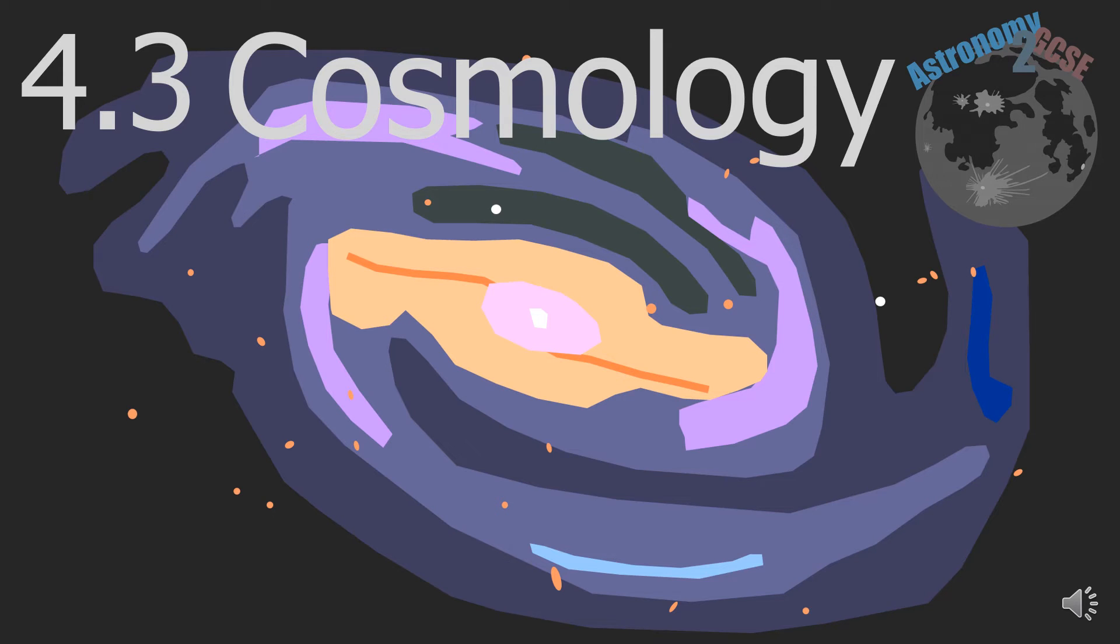Astronomy to GCSE Topic 4.3 Cosmology. So 1. Doppler principle, redshift and blueshift.